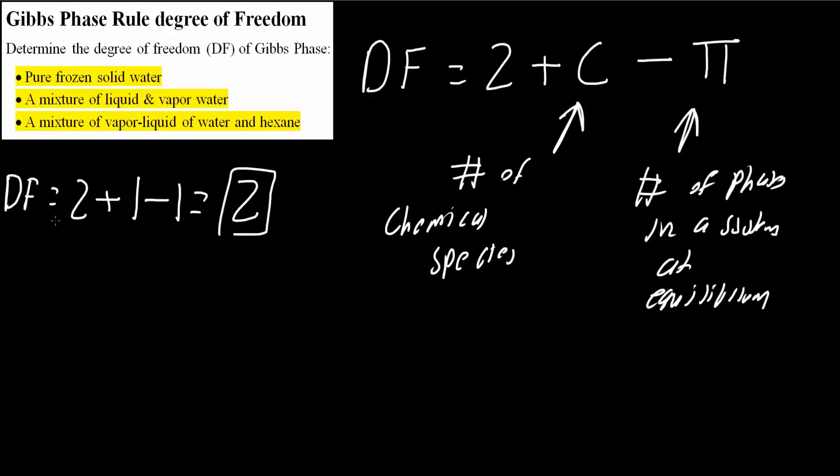Now the second one, same idea. A mixture of liquid and vapor water: DF = 2 + 1 - 2. One represents the number of chemical species, just water. Minus two because we have liquid and vapor phases. So we get DF = 1.